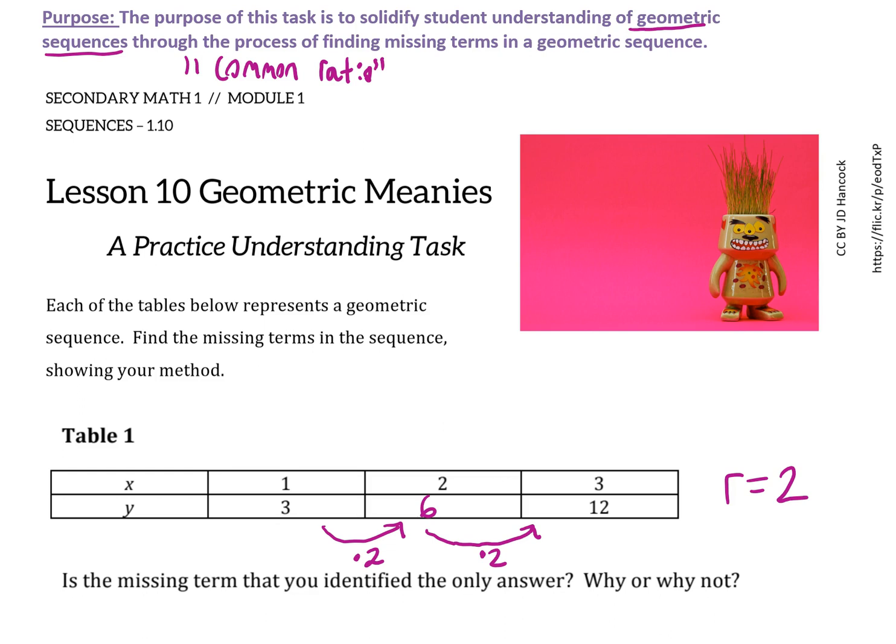Is the missing term that you identified the only answer, why or why not? And so the question there is, is there another number I could have multiplied besides 2 that would have worked? And it may not be immediately obvious that there is, but I could also multiply by negative 2. That would give me negative 6. And then negative 6 times negative 2 would give me positive 12. So R could be 2 or it could be negative 2.